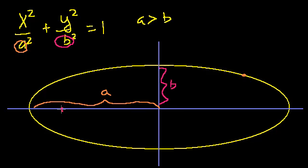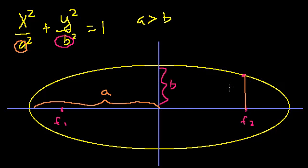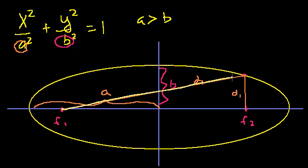Let's call these points f1 and f2 — f for focus. The super interesting, fascinating property of an ellipse, often used as its definition, is: if you take any point on the ellipse and measure its distance to each of these two foci — call this distance d1 and this distance d2 — and then sum them up, d2 plus d1 is going to be a constant that turns out to be equal to 2a.